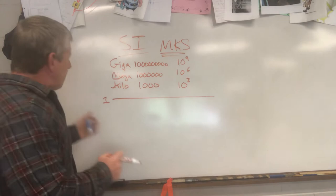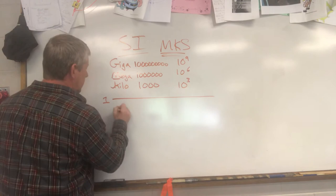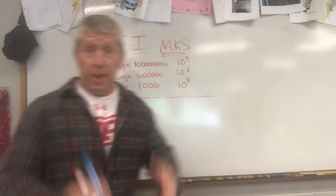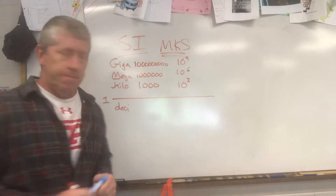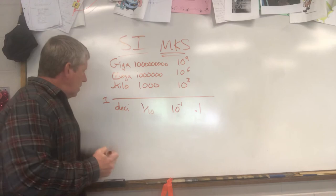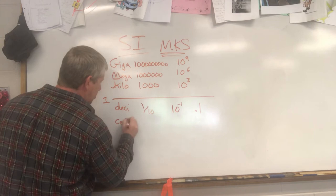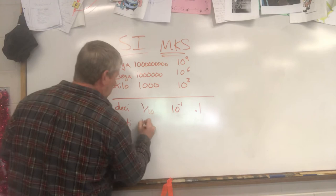Now prefixes meaning less than one. First: deci — if a prefix ends in 'a' it's big, ends in 'i' it's little. Deci means one tenth — ten to the negative first, or 0.1. A decimeter is one tenth of a meter. Next: centi — like century is 100 — centi means one one-hundredth, ten to the negative second, or 0.01.